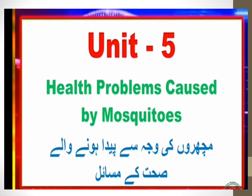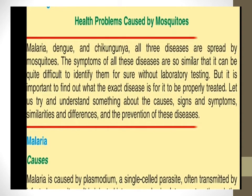In this chapter we will discuss health problems caused by mosquitoes, and we will discuss three diseases: malaria, chikungunya, and dengue. All three diseases are spreading by mosquito bite, and the similarities in symptoms and signs are almost similar, so it is really difficult to identify what exactly disease a person is having.